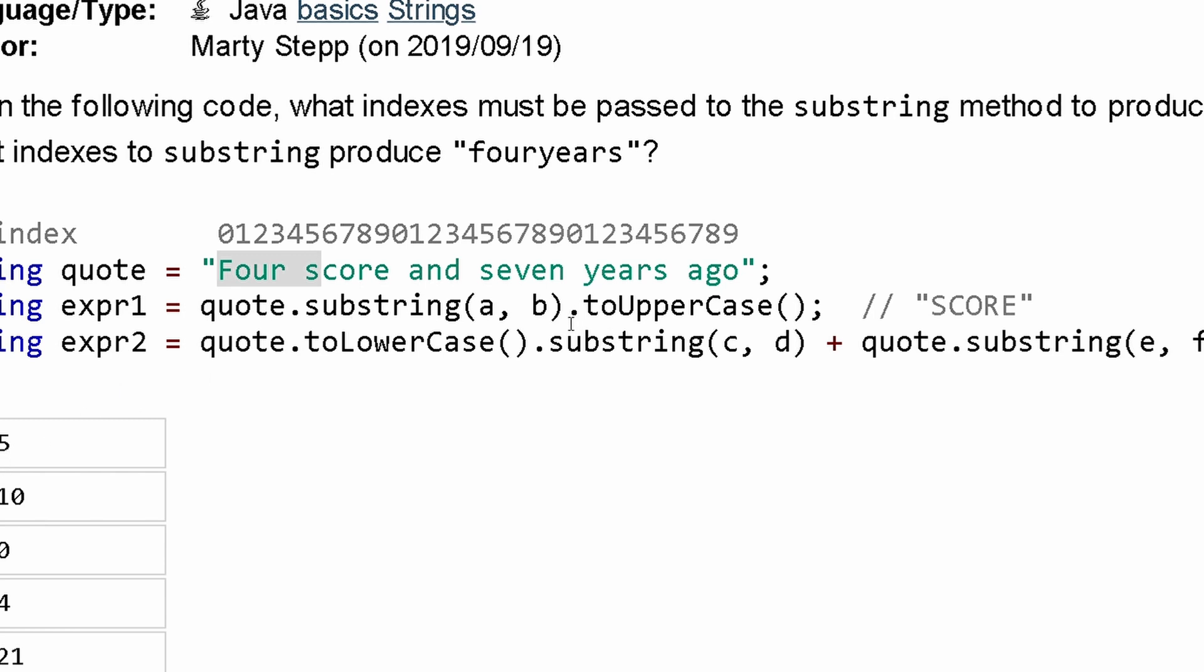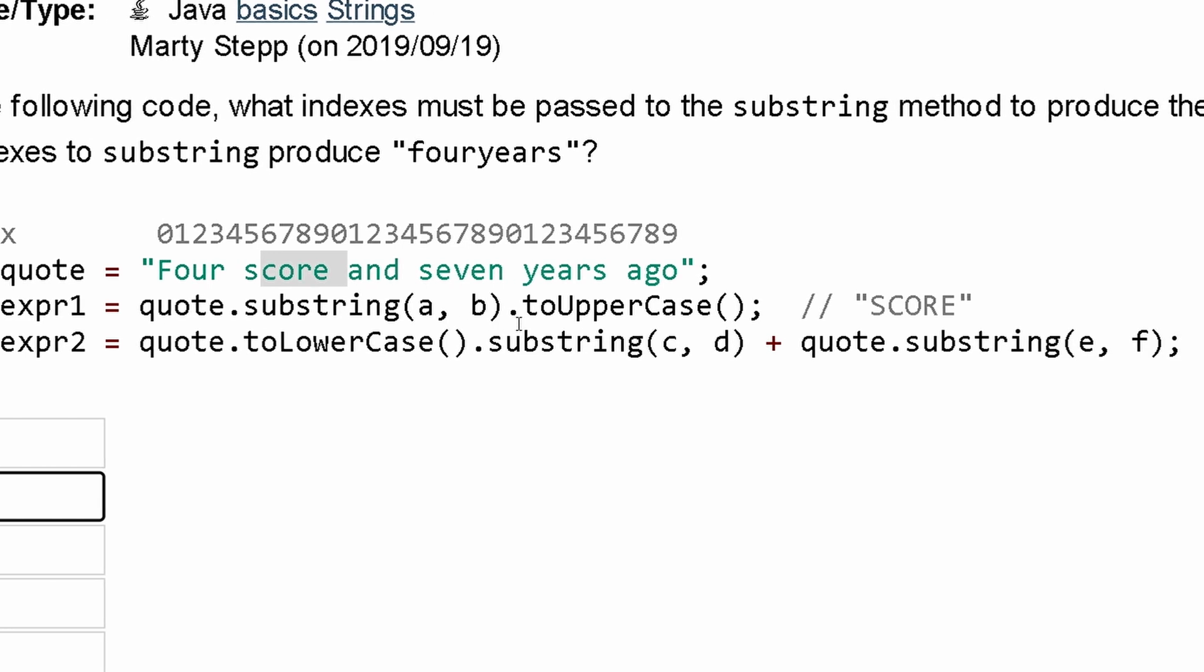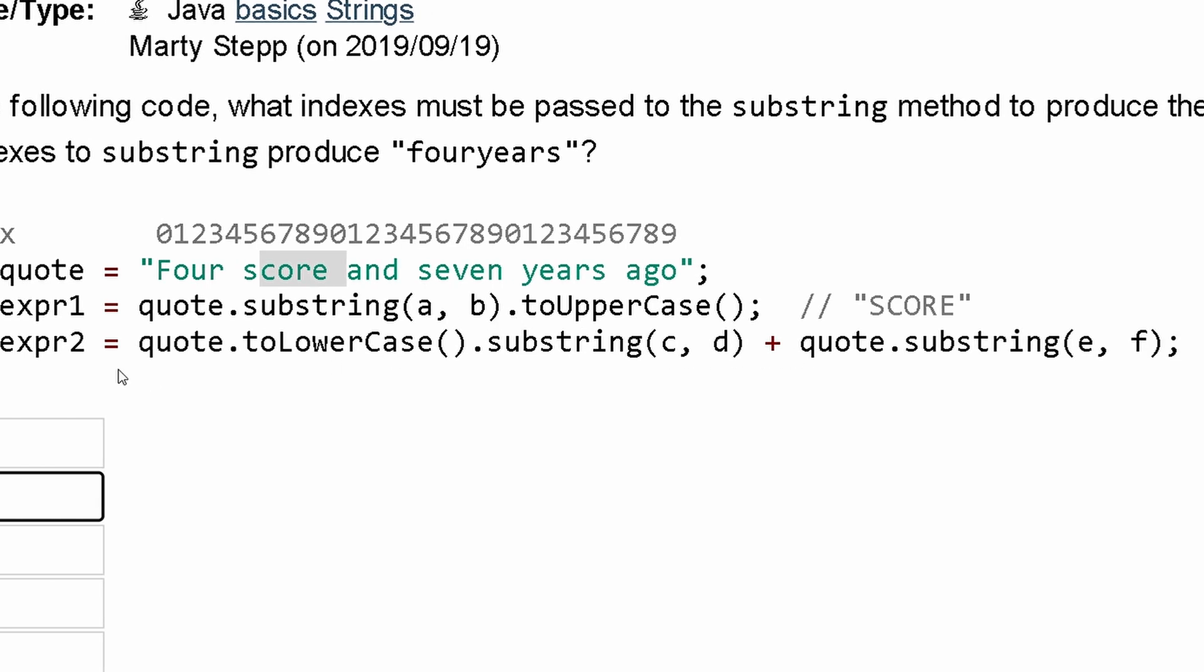And b is where it ends, so it starts at five, then we have six seven eight nine and then ten, because we don't include the last value, so we have to have ten. We're gonna have five to ten, and that is it for the first part. Next we look in expr2 where we need to print out